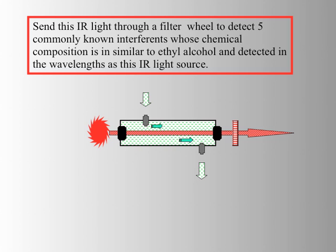There are several — in fact, many — substances that can mimic alcohol and can deflect infrared light at the wavelength being shined through. Because of this, the Intoxilyzer 5000 sends the infrared light through a filter wheel that filters out some common known interference.